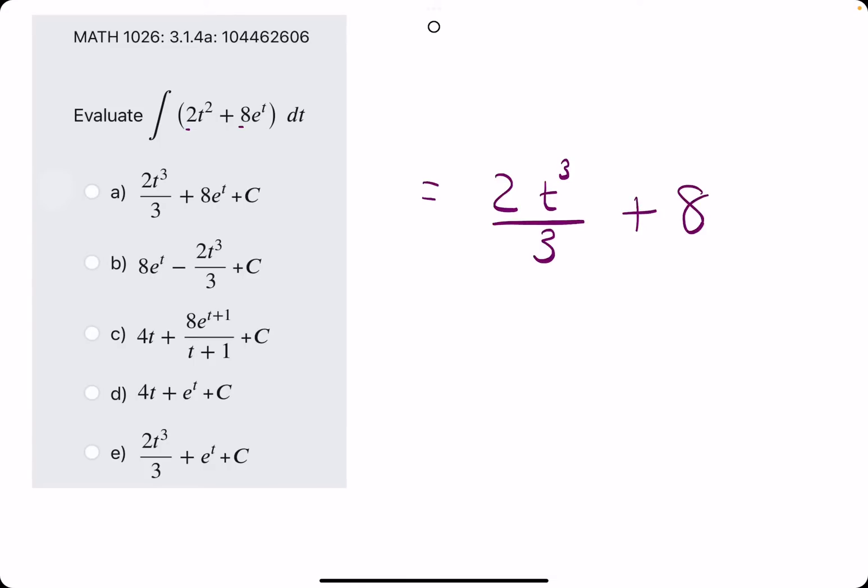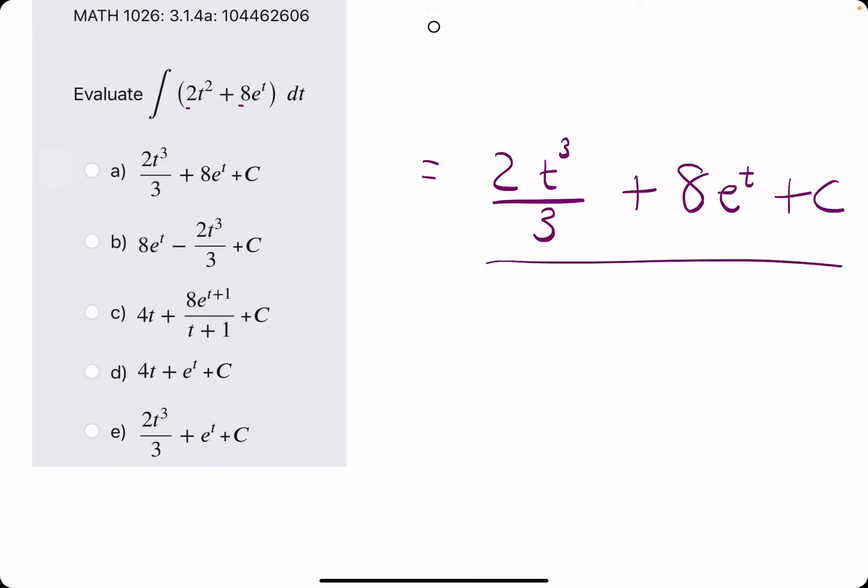We leave the 8 coefficient, and then e to the t has an antiderivative of itself. This is what we're looking for.